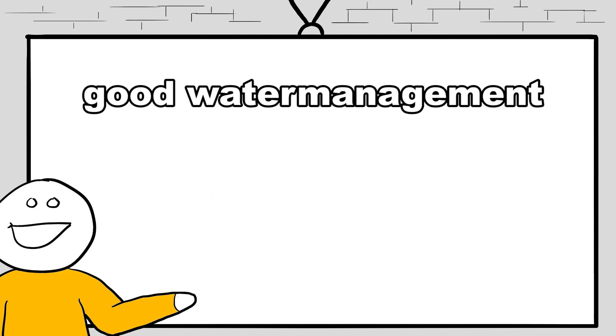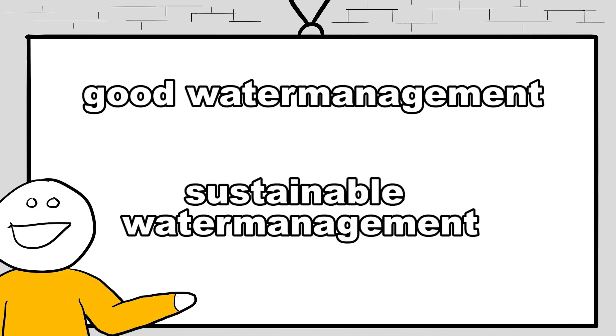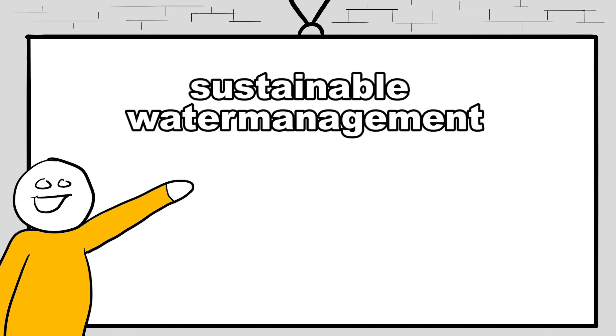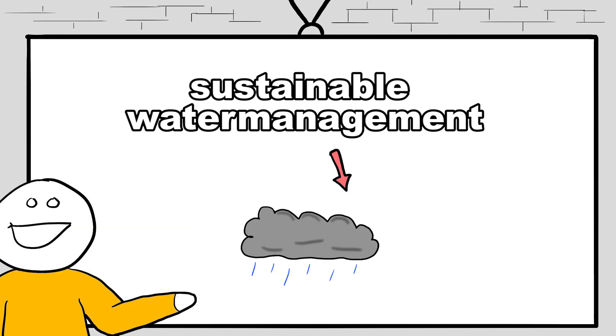And good water management means that it is very sustainable. It can last for a long time. So if you want sustainable water management, you have to make sure that you don't use too much of those aquifers and start using the precipitation and the rivers.